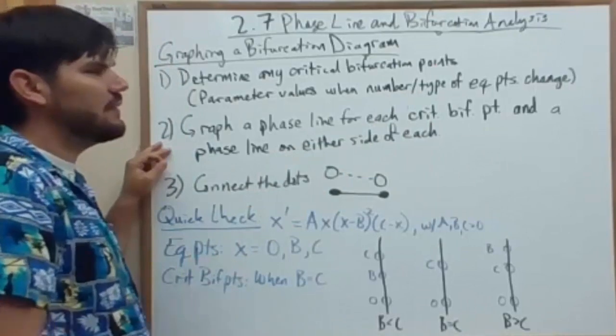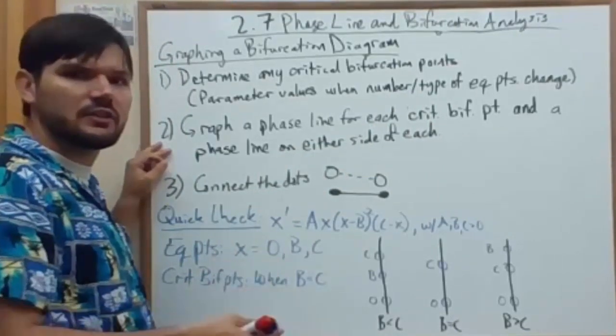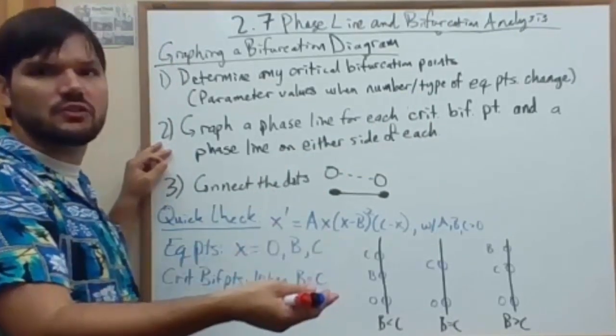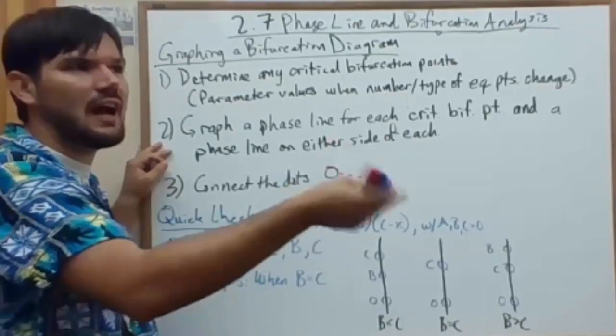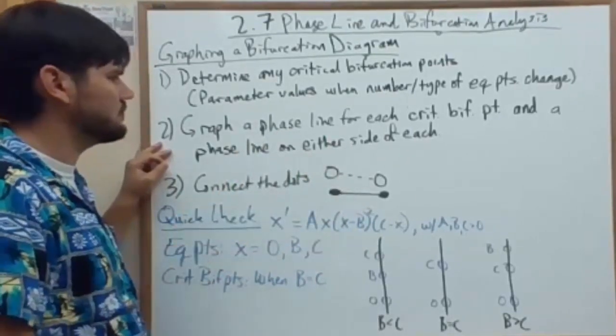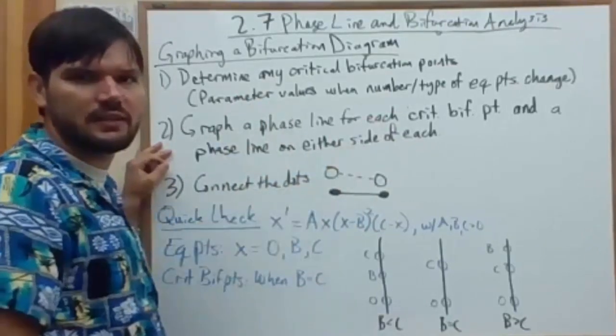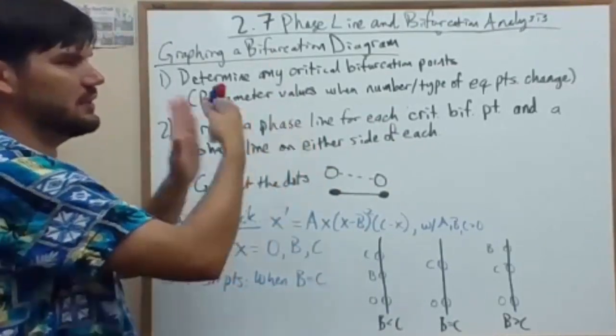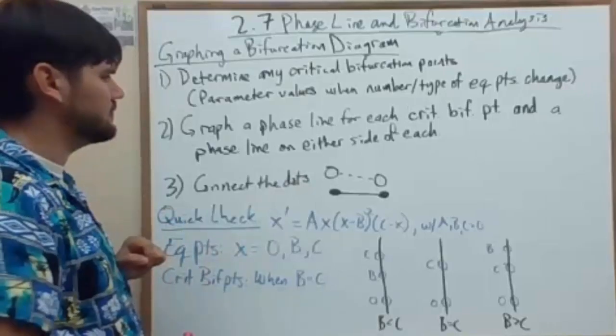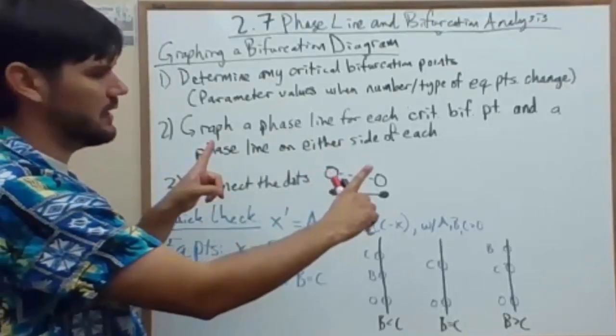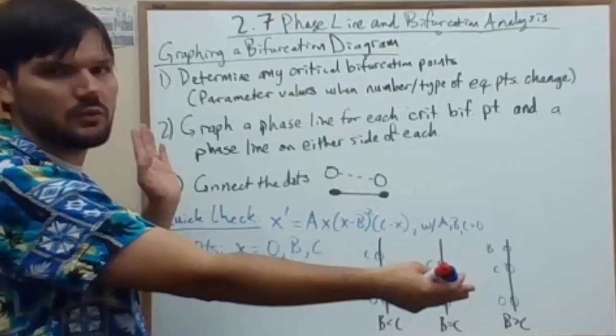Then two, we graph a phase line for each critical bifurcation point, and then put another phase line on either side of each of those. So if we have just one critical bifurcation point, we end up with three different phase lines, one fixed and two that are varying around it. If we have two bifurcation points, we have five total.